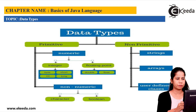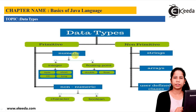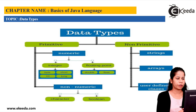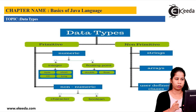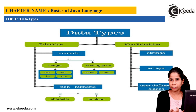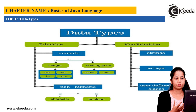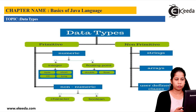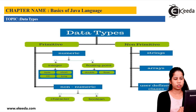Any numerical or non-numerical data can be stored in primitive data types. Numeric data types can be further divided into integers and floating points. Integers are whole numbers — any number without a decimal point. Based on capacity, integers are further divided into byte, short, int, and long. Floating point data types allow storing real numbers with a decimal point. Non-numerical data types include characters and booleans.